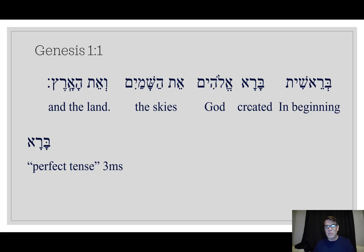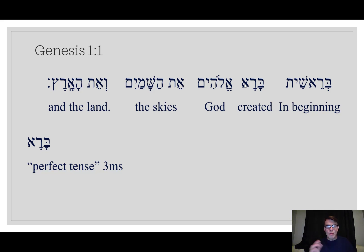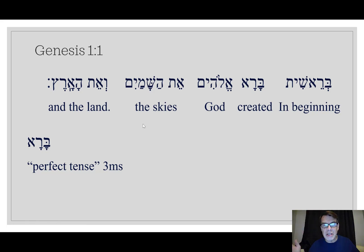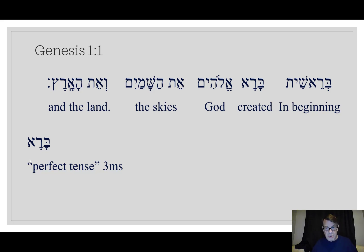The normal perfect pattern, by the way, is qamats patah. But we've got a long qamats here — it's a long patah because the Aleph kind of quiesces, so it becomes an open syllable and a long syllable. Anyway, that's not important right now. Normally the default pattern is qamats patah, but there's a lot of extra stuff. What you actually need to know from this video is that bara is the perfect tense and it's third masculine singular — so it's a 'he created.'